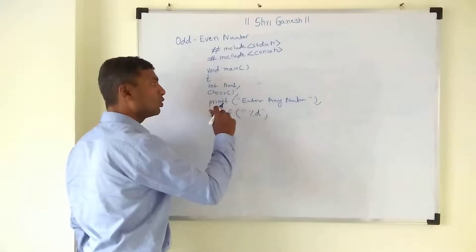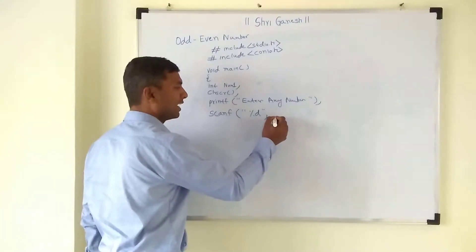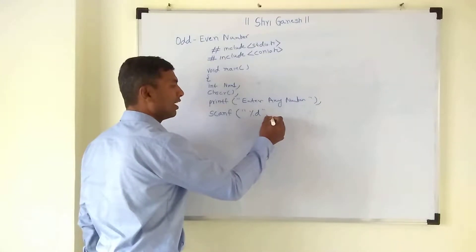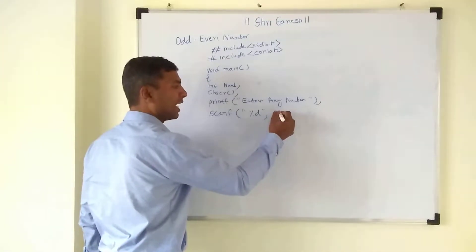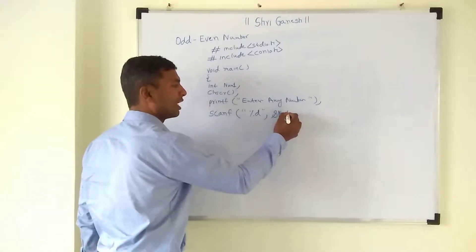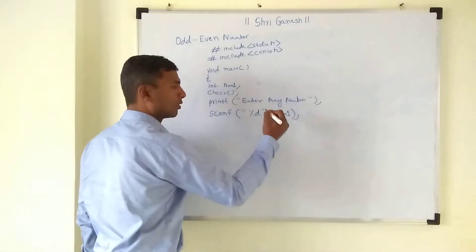As we know, scanf is having syntax: bracket, inside that double code percentage d. And where you want to store in num1, you have to give the address of num1. For giving the address of num1 we need ampersand, and ampersand represents the address. After that you have to write down the variable name num1, then bracket close and semicolon.